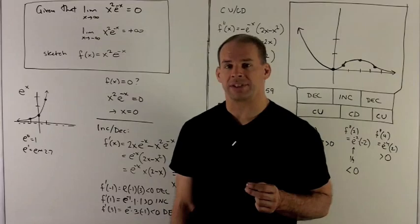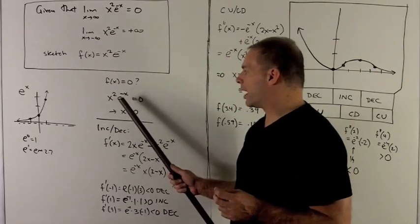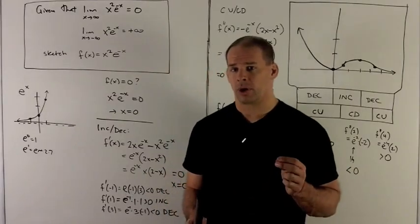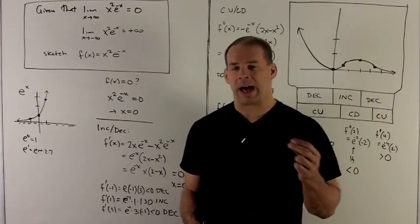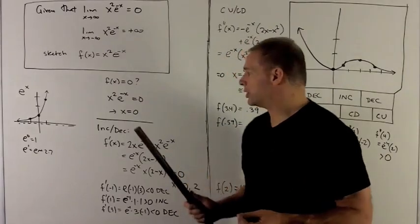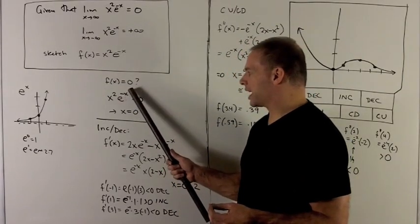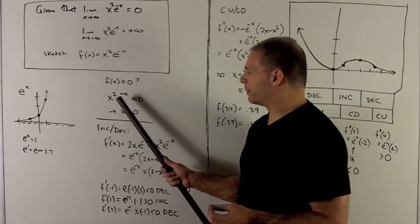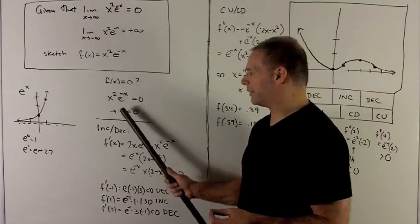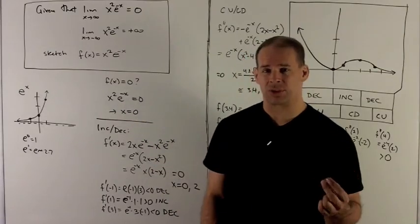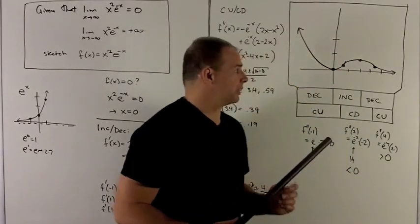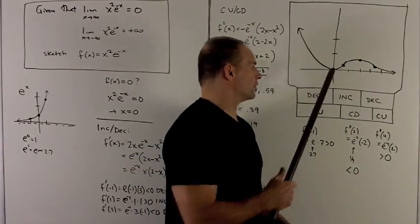Let's look for points where f(x) = 0. So we have x²e^(-x) = 0. Recall, e^x is always a positive number, so e^(-x) can never be zero. For purposes of setting it equal to zero, the e^(-x) piece will have no effect. So we only care about when x² = 0, and that's when x = 0, giving us the point (0, 0).